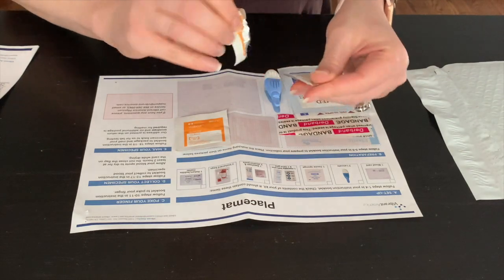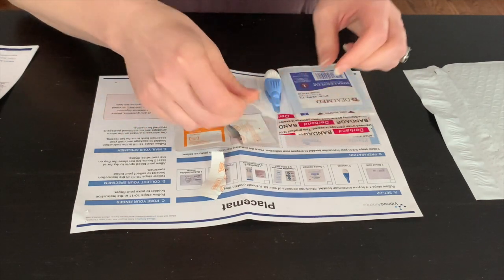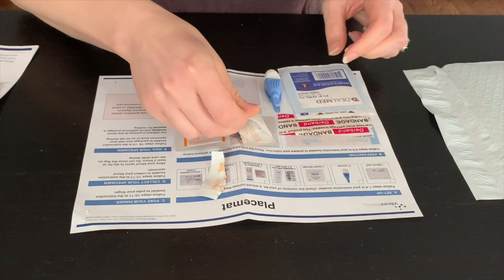Open the alcohol wipe that is provided in your collection kit and place it on the clean collection surface while you wash your hands.